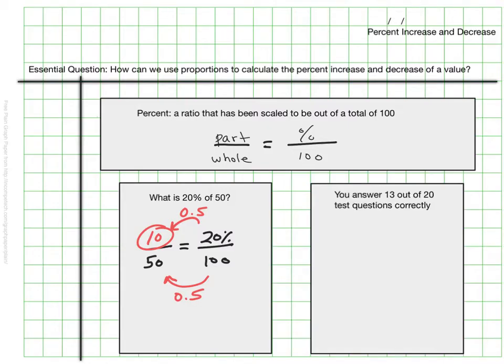So in this case, if you answer 13 out of 20 test questions correctly, we could still set this up knowing three out of the four. We always know that our percents are out of a hundred. This time we don't know the percent, but we know that we got the part 13 correct out of the whole total of 20. And once again we could use that scale factor.